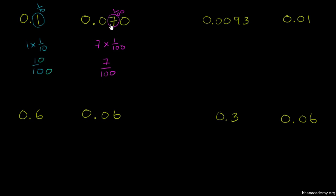Another way you could think about this is: if you were to increment by hundredths, you would start at 7 hundredths, 8 hundredths, 9 hundredths, and then you would get to 10 hundredths — so you would get to that number. Multiple ways you could think about it, but it is definitely larger. So this is definitely larger — greater than. The greater than symbol opens to the larger value.